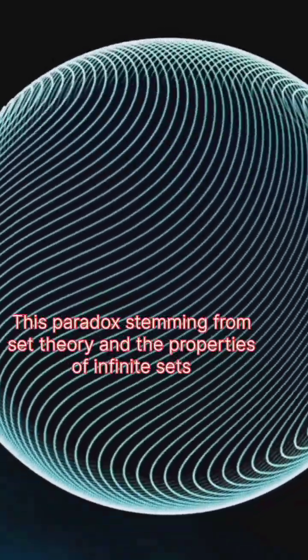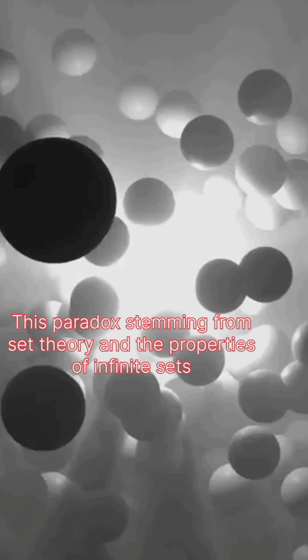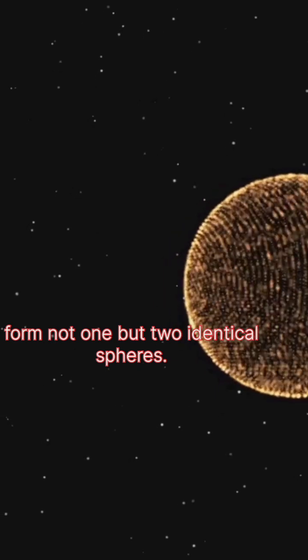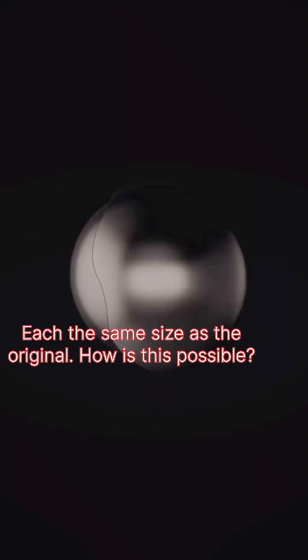This paradox stemming from set theory and the properties of infinite sets suggests that you can take these five pieces and with the right movements form not one but two identical spheres, each the same size as the original. How is this possible?